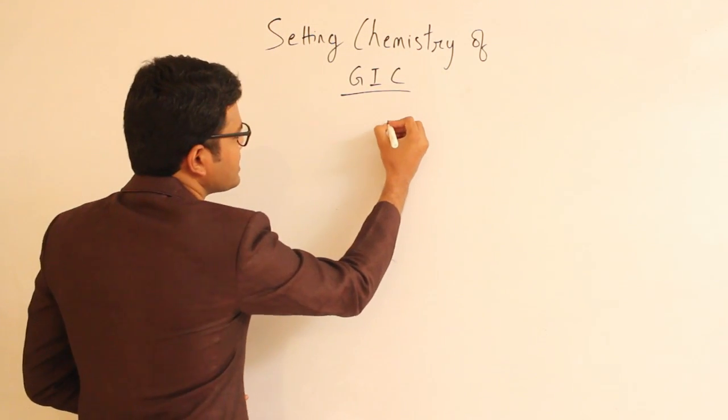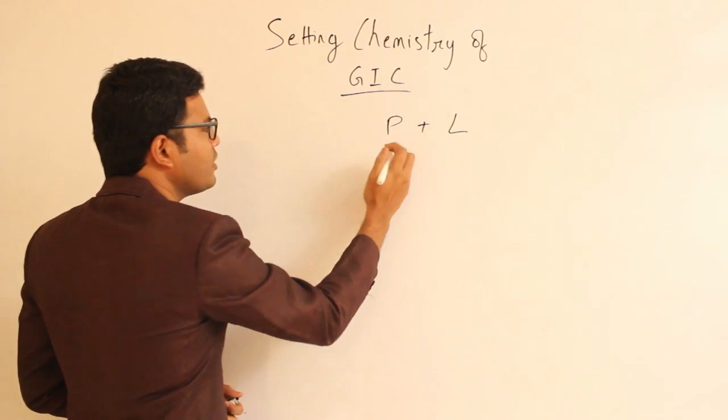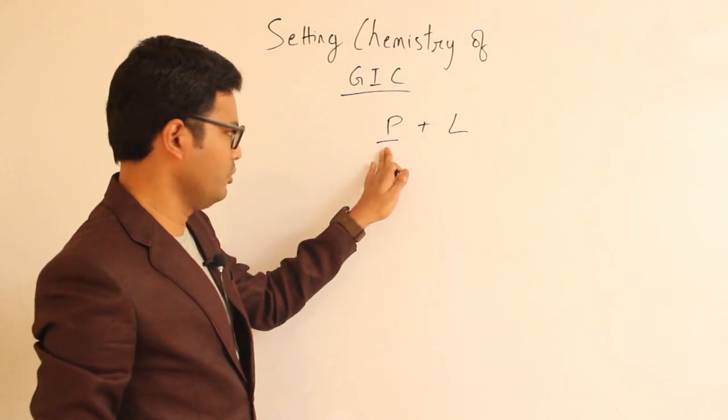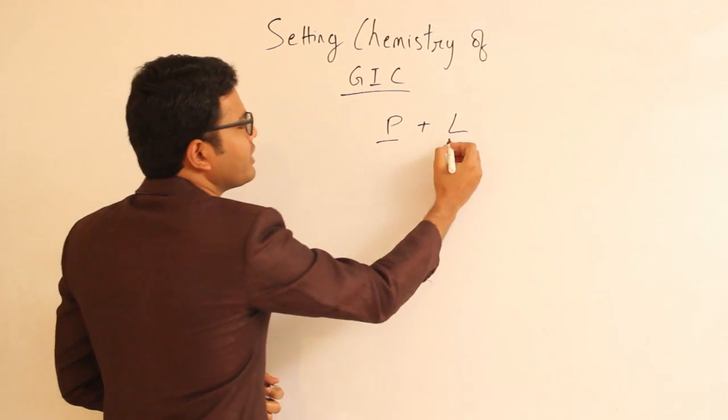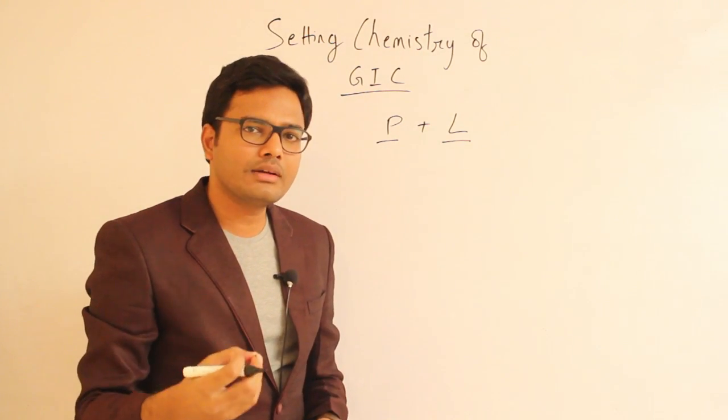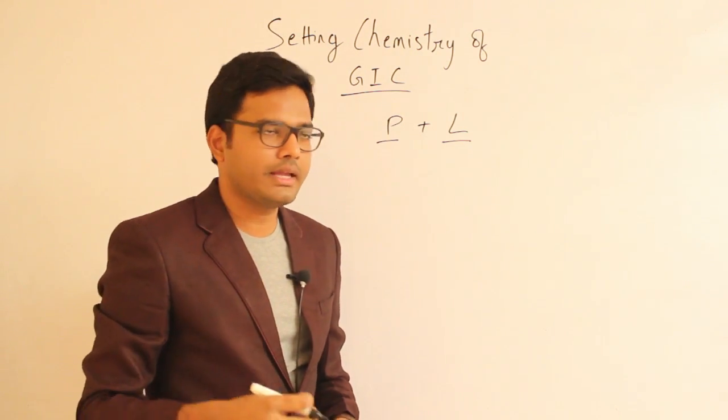Basically, GIC is available as powder and liquid. The powder contains calcium aluminofluorosilicate, an acid-soluble powder, and the liquid contains water and mainly polyacrylic acid along with other co-polymers such as itaconic acid, malic acid, or tartaric acid.